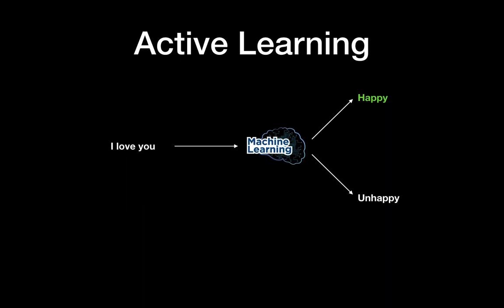The second example of entropy in machine learning is active learning. Say you have a machine learning model classifying sentences as happy or unhappy — this is sentiment classification. When you say 'I love you,' the model says it's happy. 'I'm angry,' it's unhappy. 'I'm sad,' unhappy. When you say 'I am feeling blue,' it's supposed to be unhappy but the model predicted happy — so this is a wrong case. Say if this is a version one model and we want to improve it, how will you improve this model? We can use active learning and entropy for this.